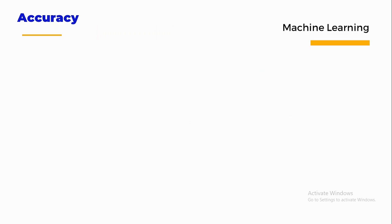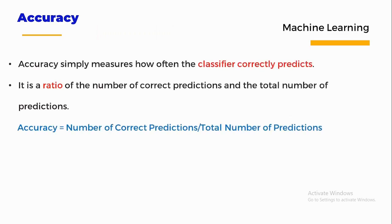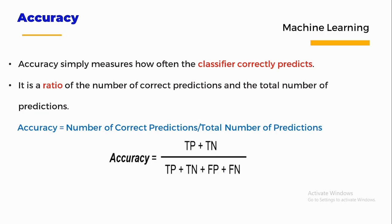The next metric is accuracy. Accuracy simply measures how often the classifier correctly predicts — it is the ratio of the number of correct predictions to the total number of predictions. The formula is: Accuracy = (True Positive + True Negative) / (TP + TN + FP + FN).